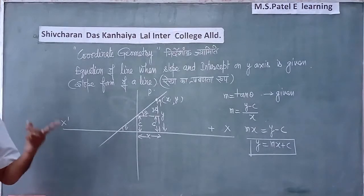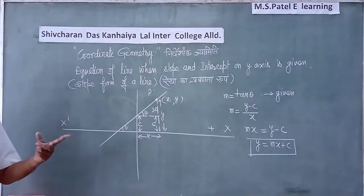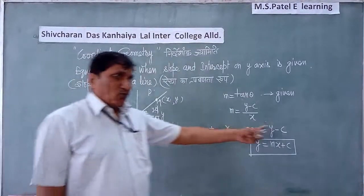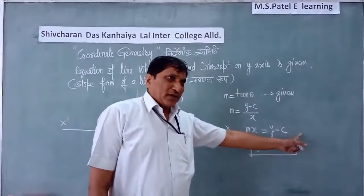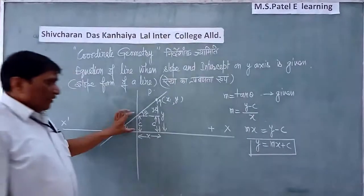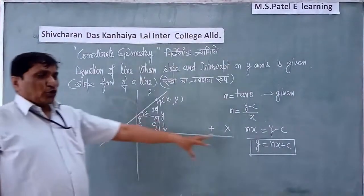So y minus c is given. This gives us the slope-intercept form y equals mx plus c.